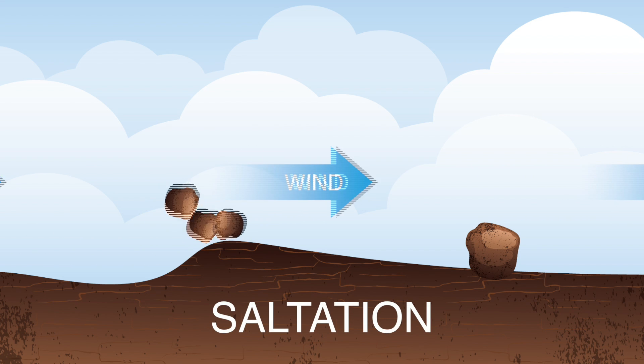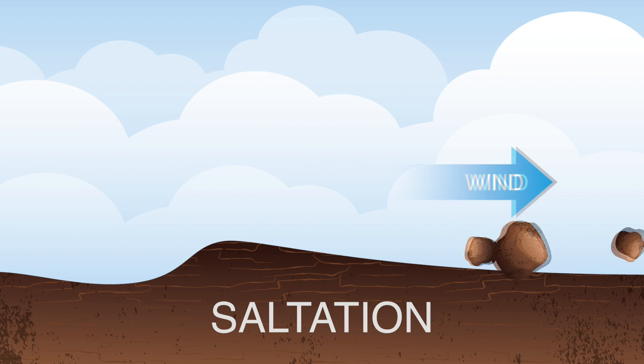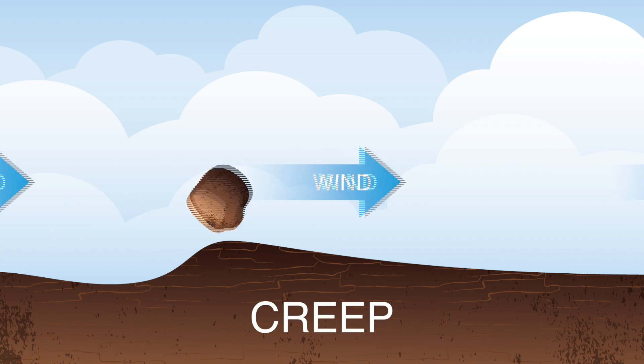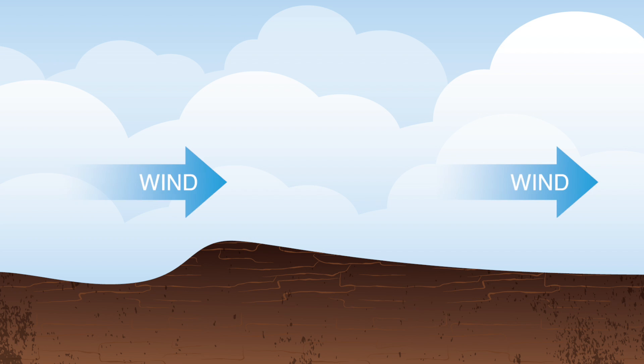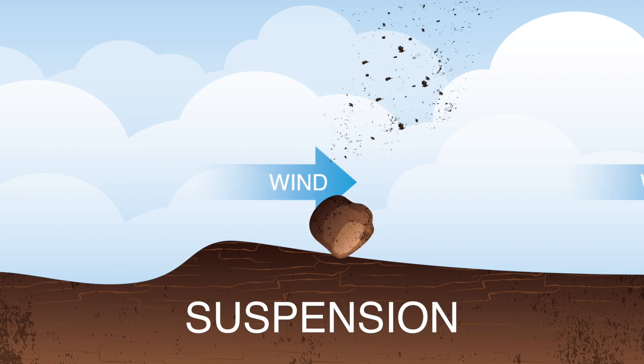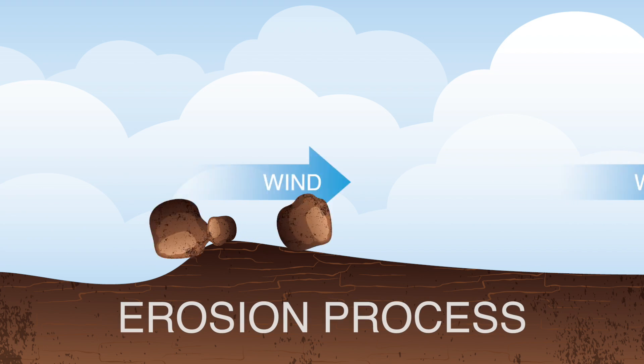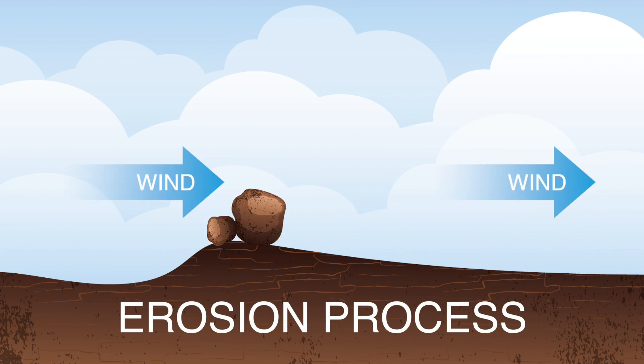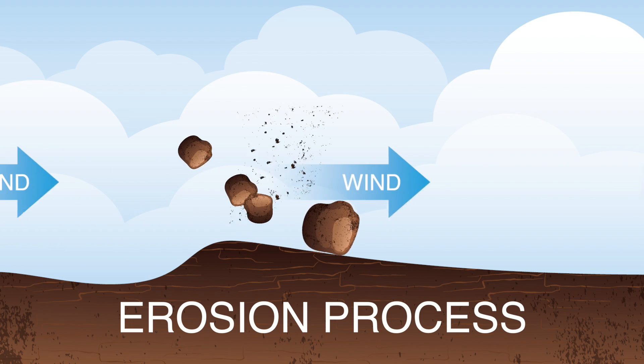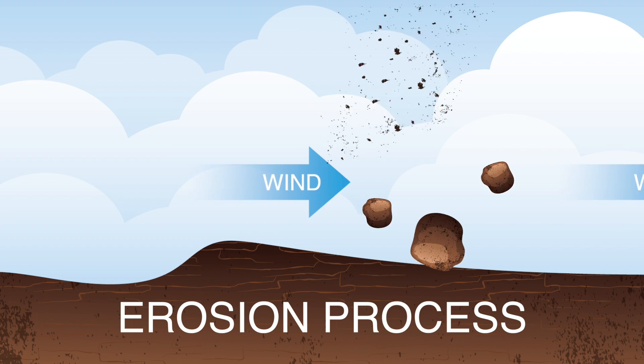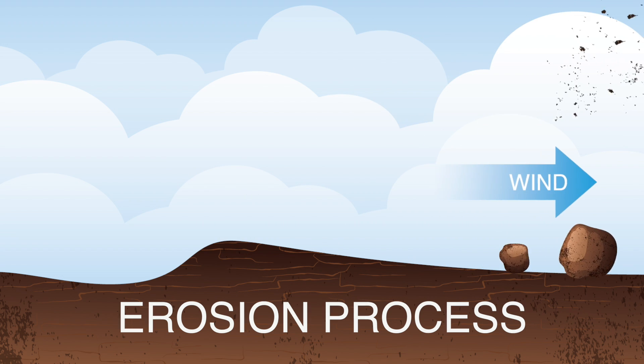We have a couple different processes: saltation, creep, and suspension. Saltation is the bouncing of the particle across the surface, where it's dislodging smaller particles and allowing those to be picked up by the wind. Creep is where it's rolling across the surface. Suspension is where that particle is actually being lifted into the air and carried far distances — your clay particles would be suspended. Your larger aggregates may creep across the surface or stay in place. Your sand particles may saltate or bounce across the surface and dislodge other soil particles. The larger the particle or mass, and the more you can make those particles aggregate together and hold together, the less distance they're going to move across the field.